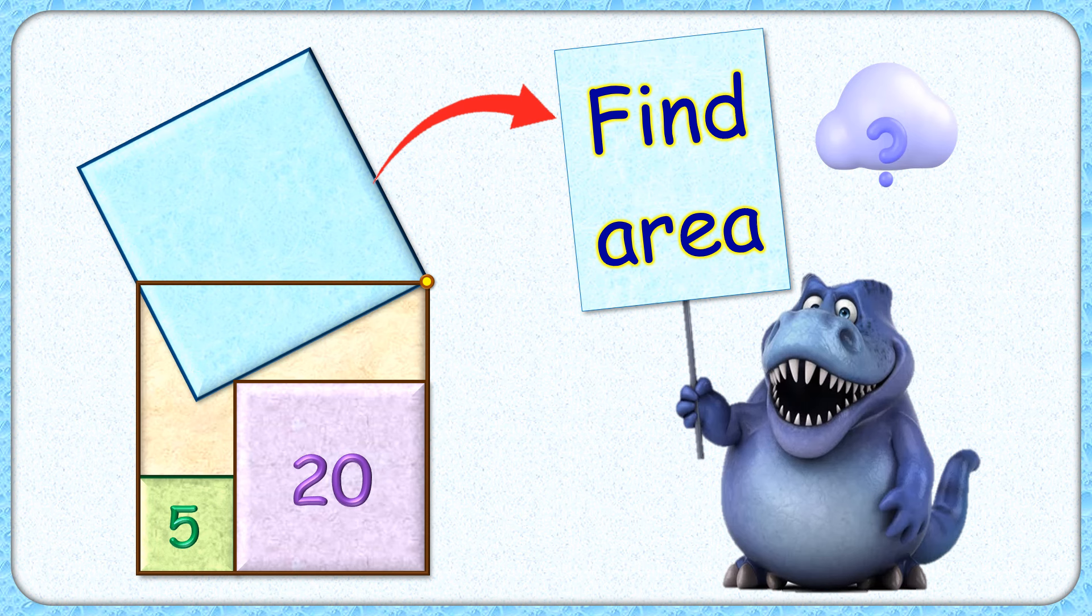Welcome everyone to this interesting question. We are given four squares with green and purple squares fitted inside this brown square. The area of the green and purple squares is 5 and 20 centimeter square. The exciting part is with this limited data we have to find the area of this blue square.